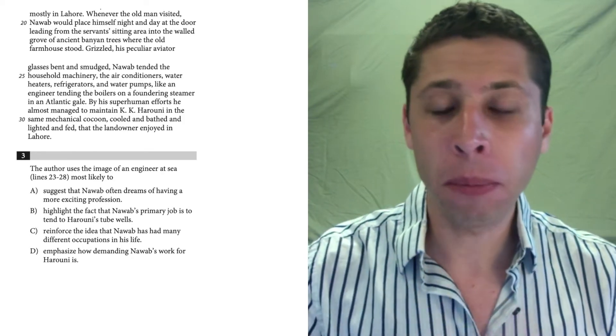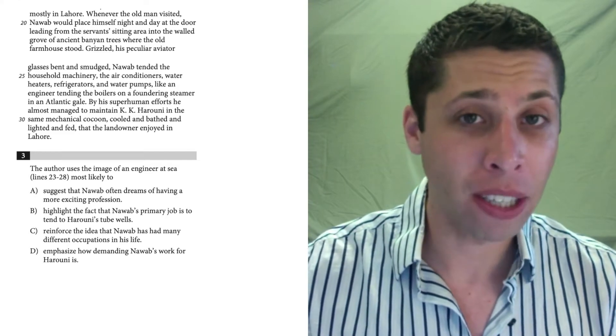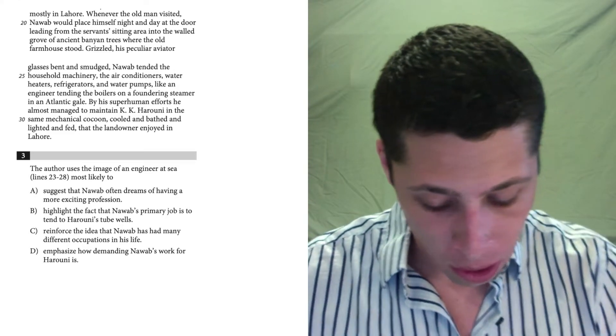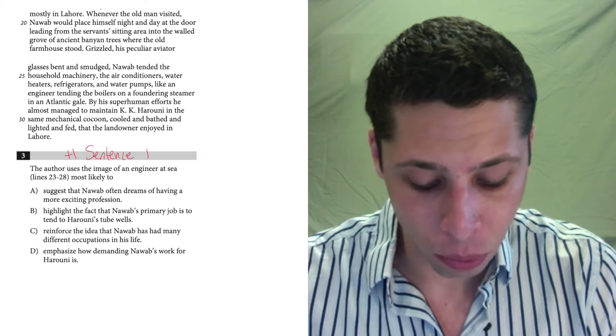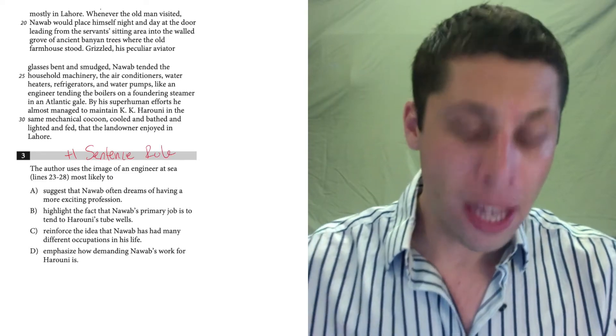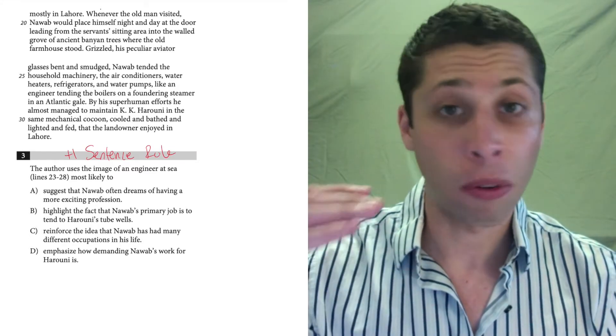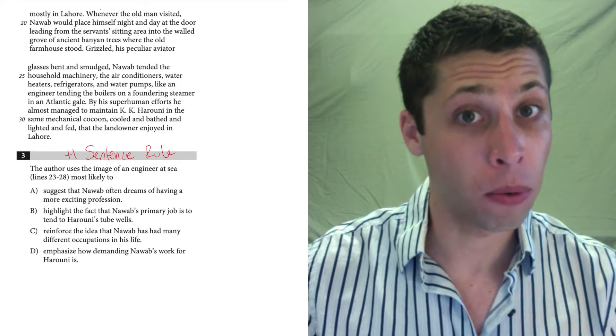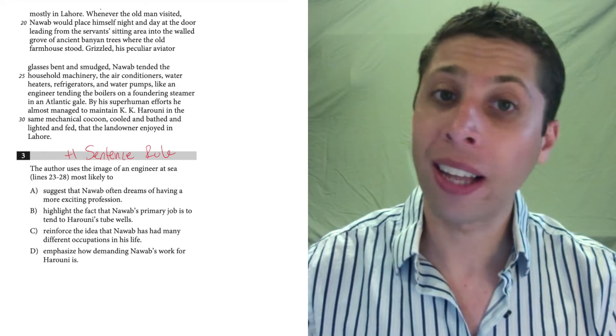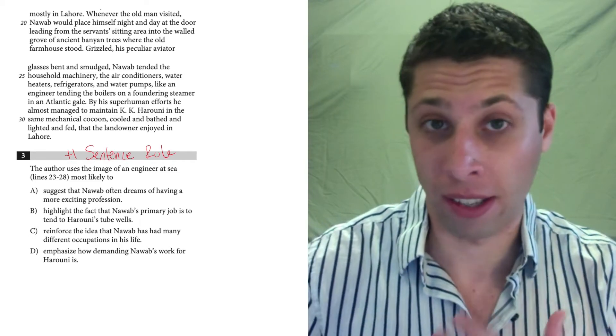However, there is an important rule here that's going to make our lives easier. Whenever we have a line reference in the question, we should follow the plus one sentence rule. Meaning that we shouldn't just read lines 23 to 28. We should read a sentence before and a sentence after what we're told, plus one before, plus one after, because a lot of times the SAT kind of gives the answer away in those extra sentences.